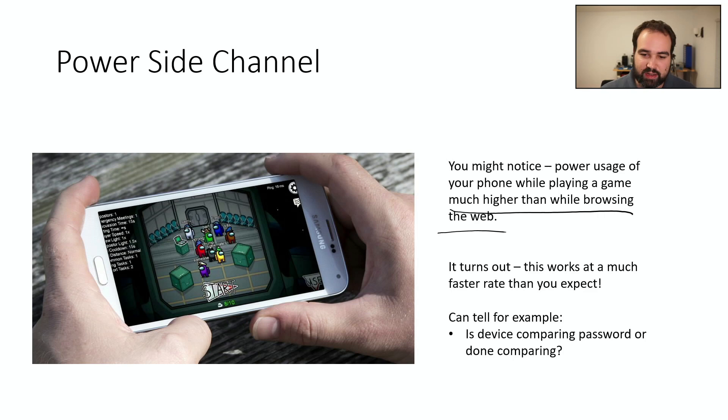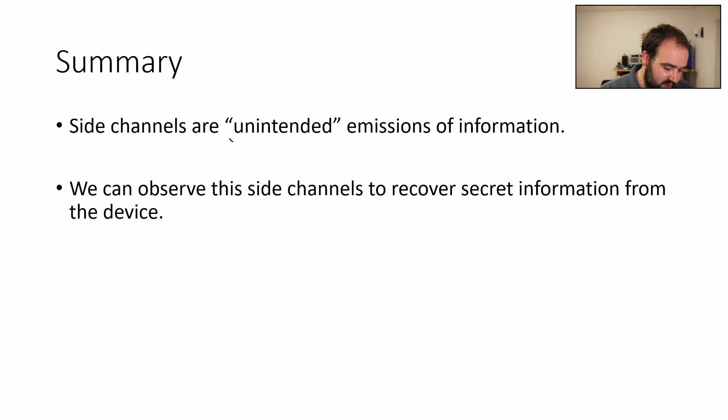But in general, side channels are this unintended emission of information. So it's emitted in some unintended channel. It's not the regular communications channel. It's not a communications error. And we can observe these side channels to recover secret information. So if we have these conditions, we generally have this side channel attack.